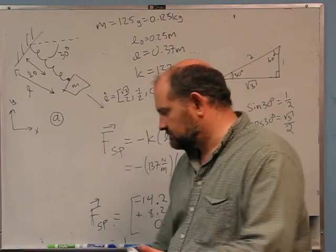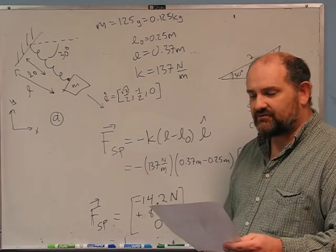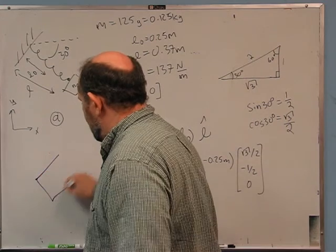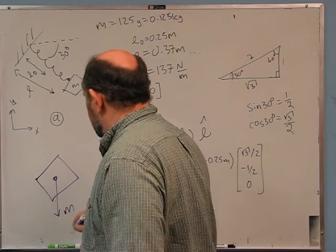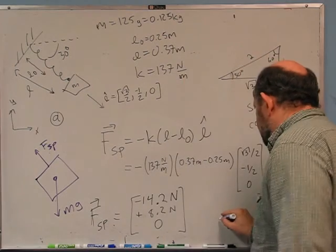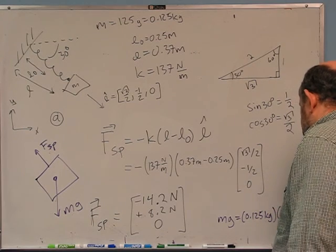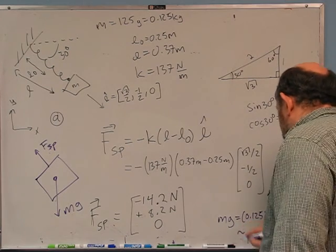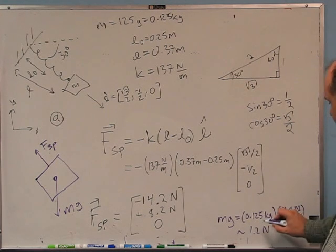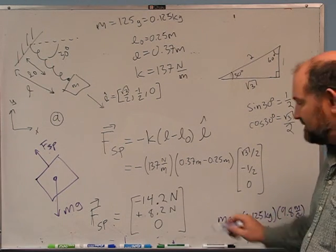Third question: Can you conclude that there are any forces other than the spring and gravity acting on the block? I'll start with a free body diagram. There's the mass, gravity mg downward, and the spring force. It's interesting to figure out the magnitude of gravity: 0.125 kg × 9.8 m/s² ≈ 1.2 N — quite a bit lower than the spring force, by about a factor of 10.